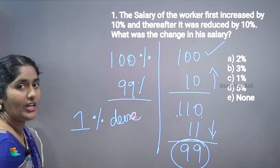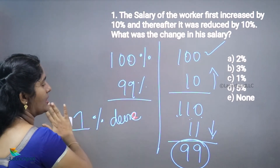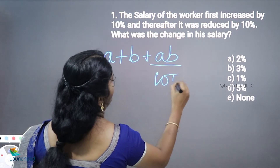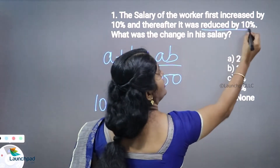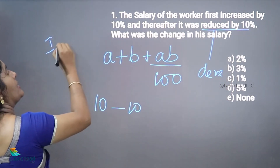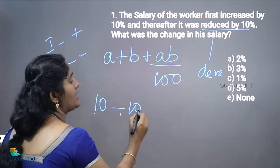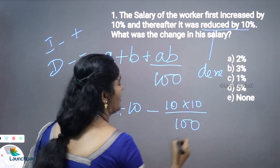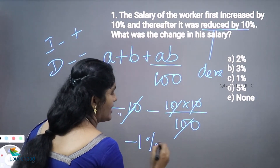So this is the effective change. The shortcut formula for this type of question is A + B + AB/100. Here A is +10 (increased) and B is -10 (decreased). Increment is denoted by plus and decrement by minus. So: +10 + (-10) + (10 × -10)/100 = 0 + (-100/100) = -1 percentage decrease.